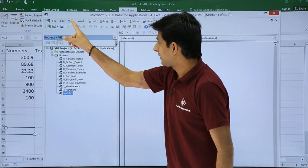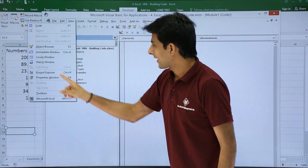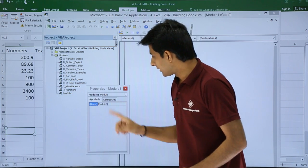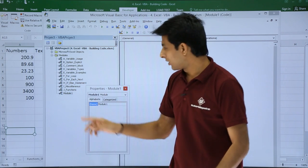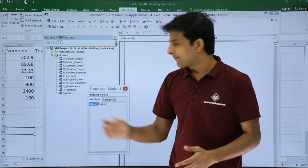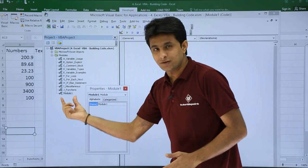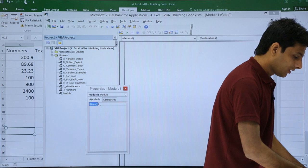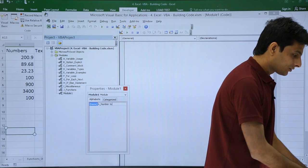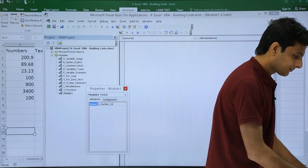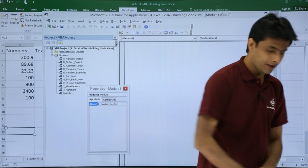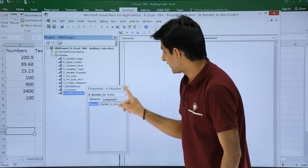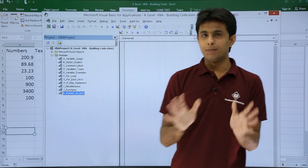The name of the module is Module 1. I want to rename it. I can go to the View menu bar and click Properties Window. Here it is given as Module 1. I'll remove that and type k_NumberToText. I'll click outside and close. Now it is k_NumberToText.